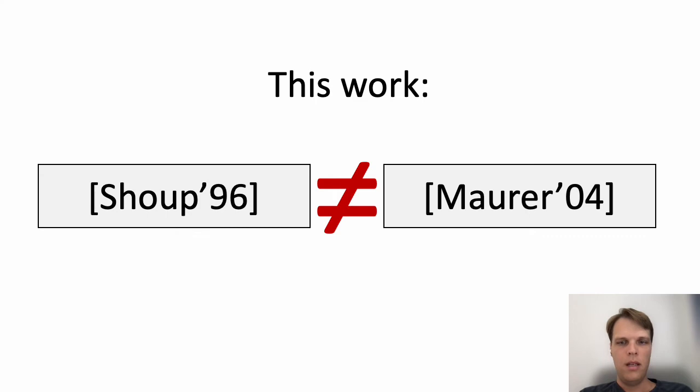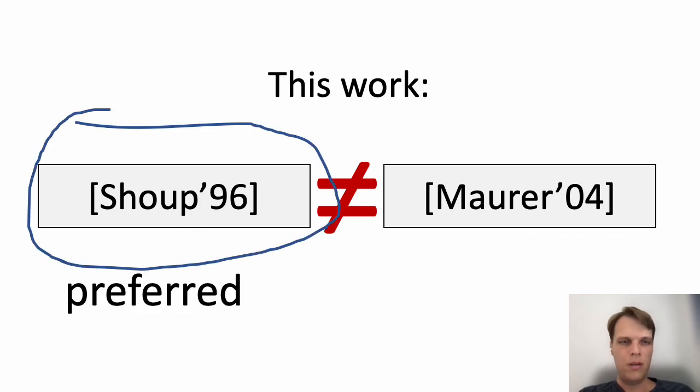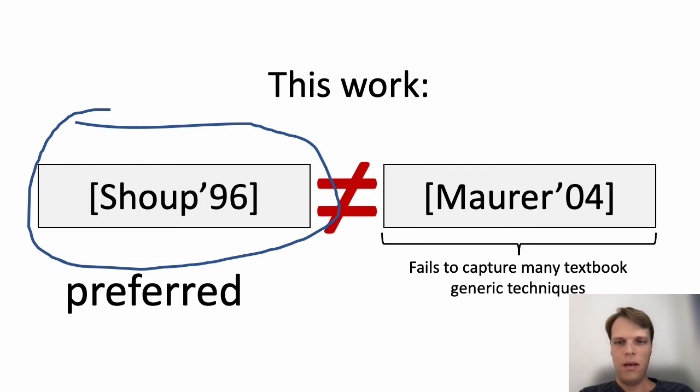The high-level takeaway is that Shoup's model, when in doubt, is the model to use. The reason is that we find that Maurer's model fails to capture many generic techniques, to the point where many classic textbook results do not hold in Maurer's model, despite easily holding in general groups. Shoup's model, on the other hand, does not suffer from these limitations.